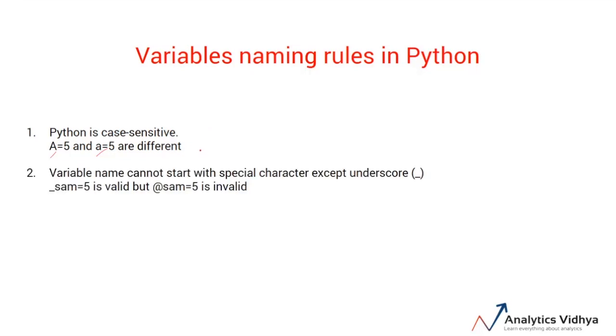Second, variable names cannot start with special characters except underscore. So because of this, underscore_sam = 5 is a valid variable name, but @sam = 5 is invalid. Also, variable name cannot start with a number, so something like 9sam = 5 is invalid.